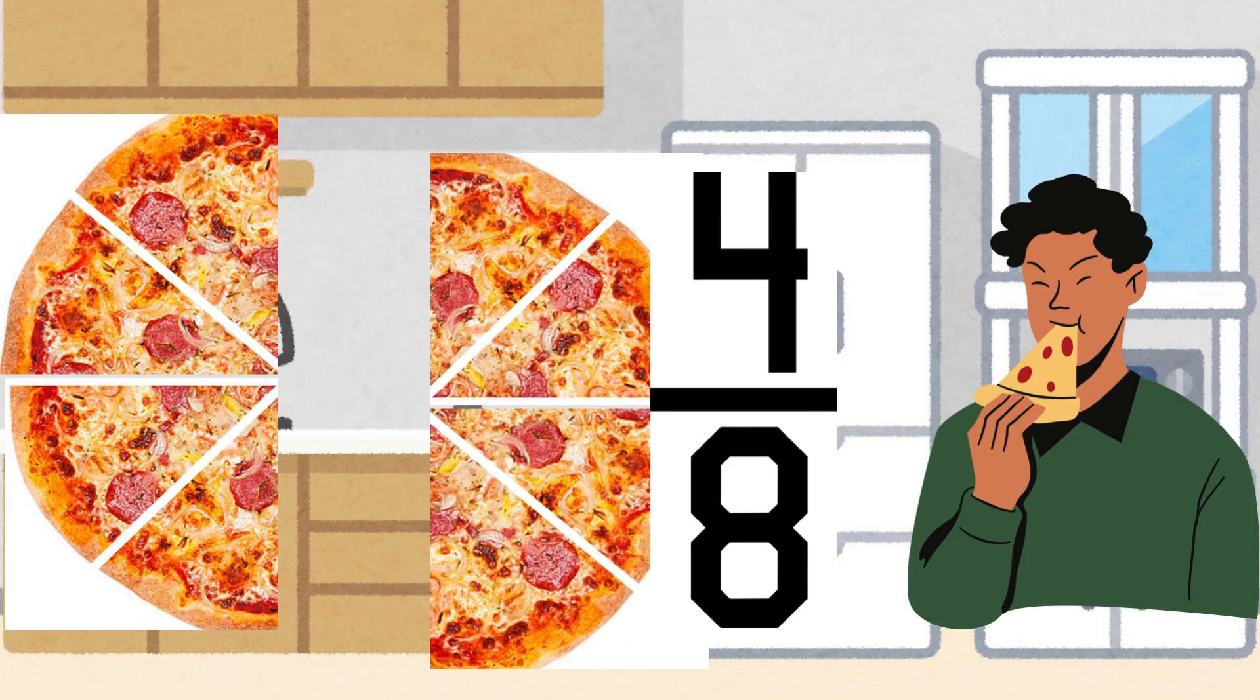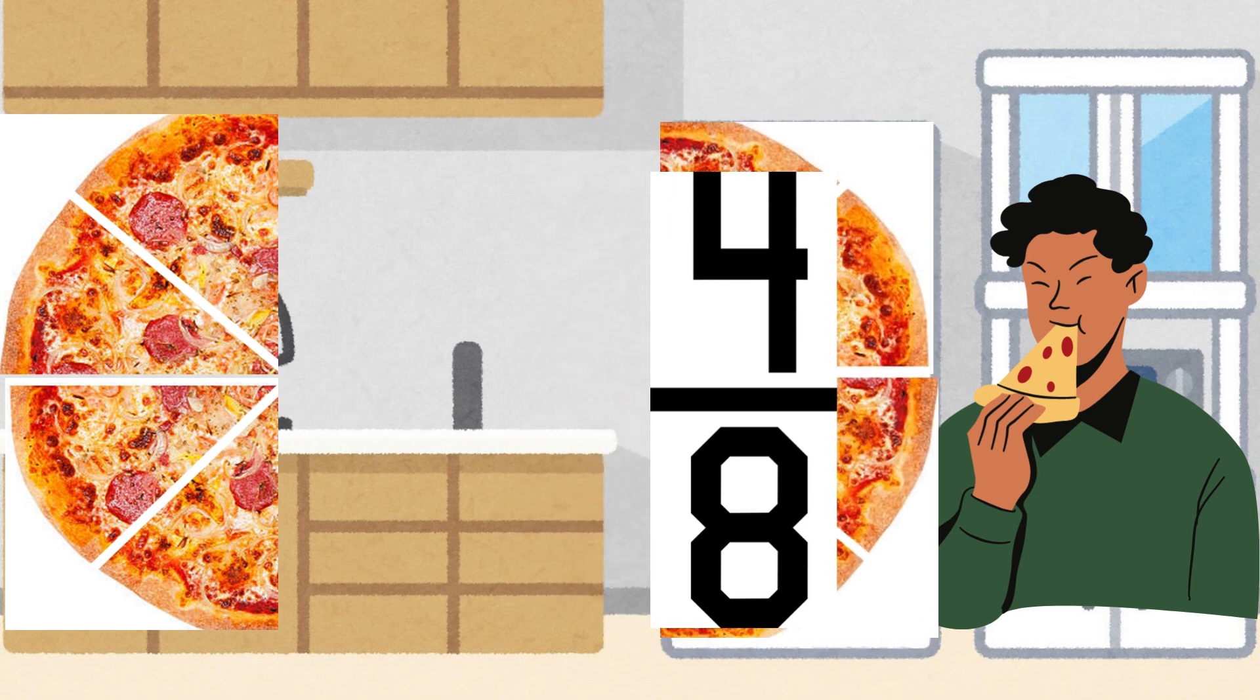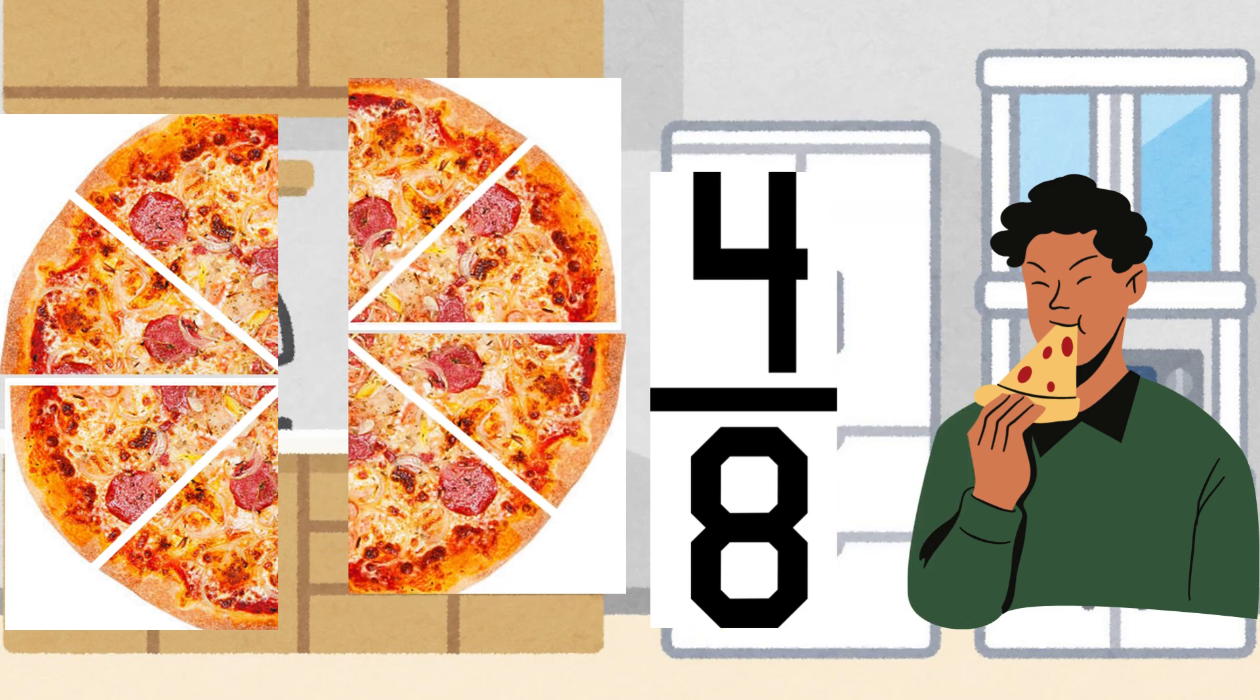Pizza 3. Jonan cuts his into eight equal parts and eats four parts. The eaten fraction is four over eight.